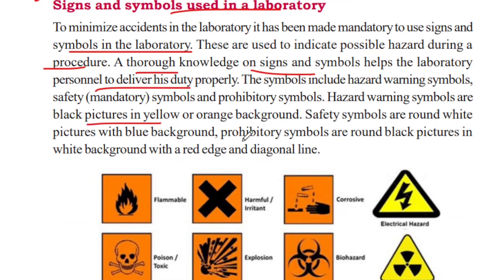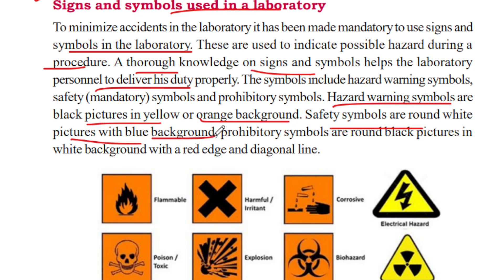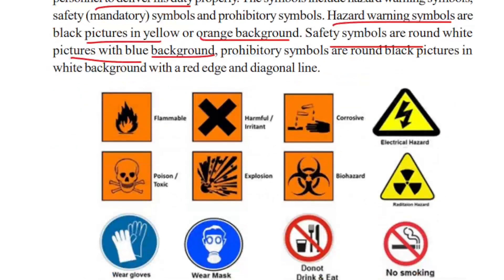Hazard warning symbols are black pictures on a yellow and orange background. In the safety symbols, you can use white pictures with a blue background. You can use the importance of safety — for example, gloves or a mask. These are safety precautions shown in blue color.